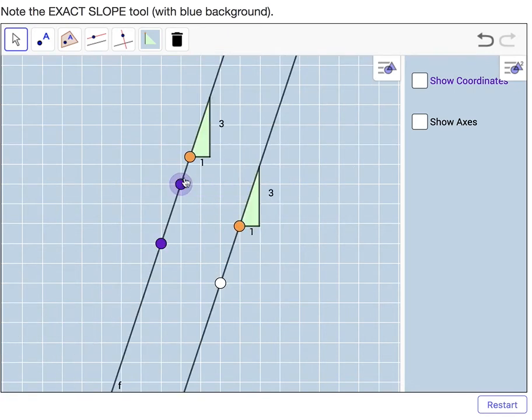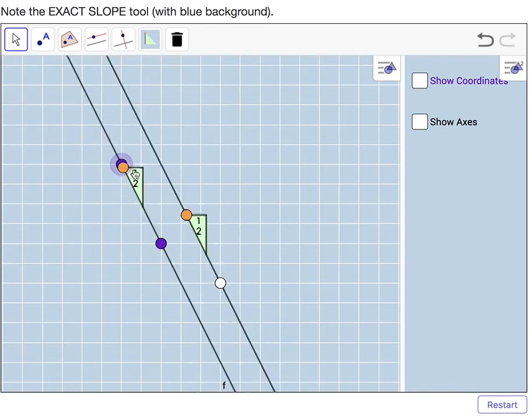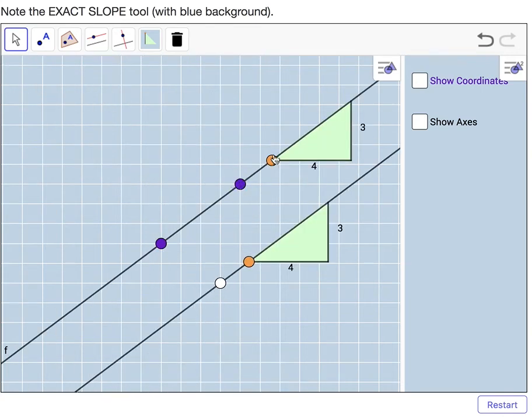And you can move this around too. The slope triangles will stay on the line, and you can drag them so you can see them better. But regardless, parallel lines have the same slope.